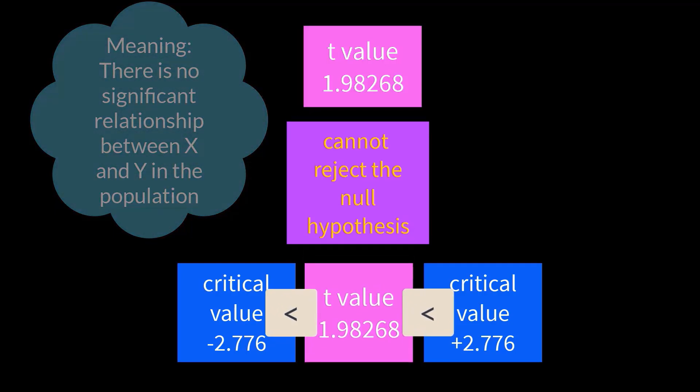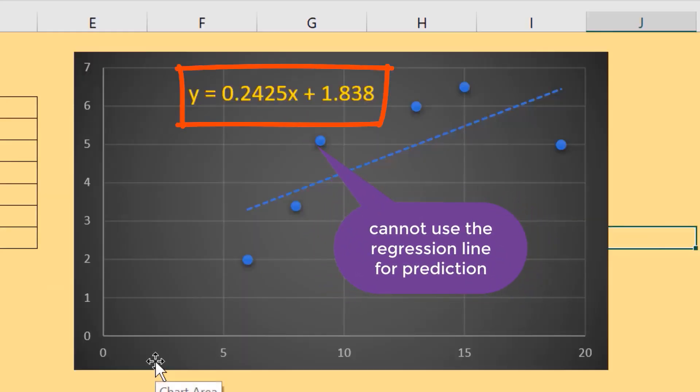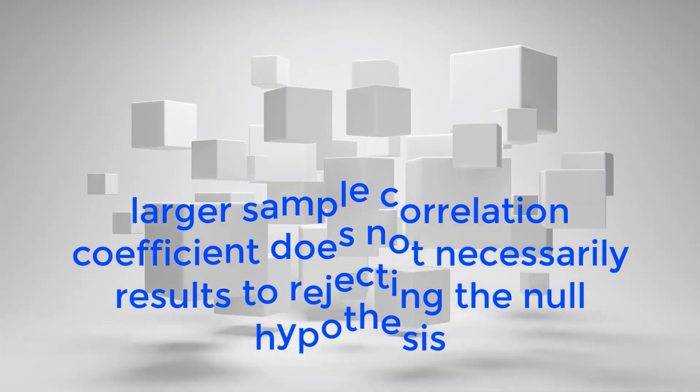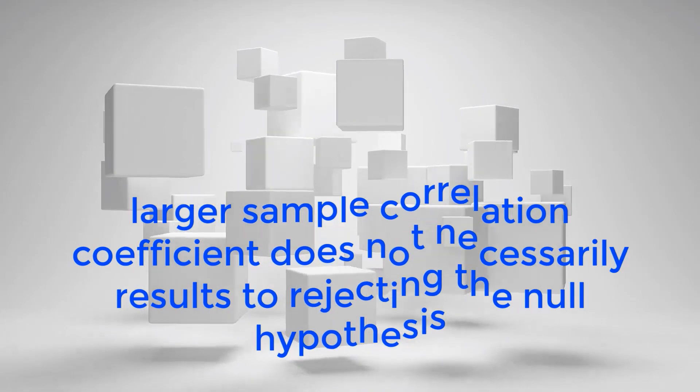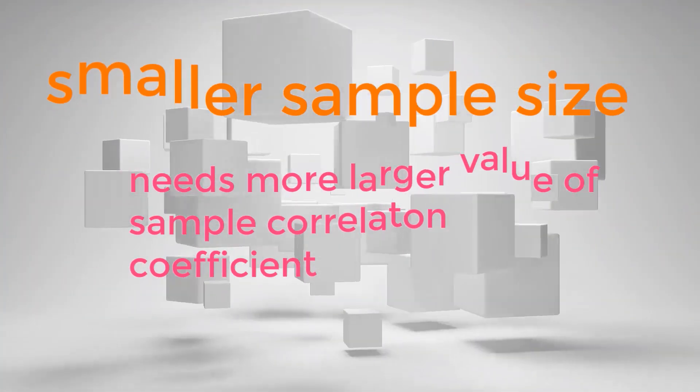The main point here is that larger sample correlation coefficient does not necessarily result in rejecting the null hypothesis. A smaller sample size needs a larger value of sample correlation coefficient to reject the null hypothesis.